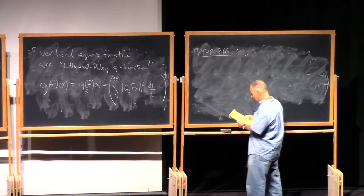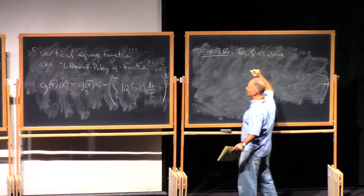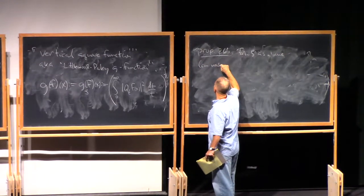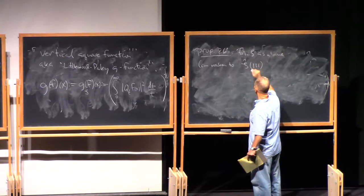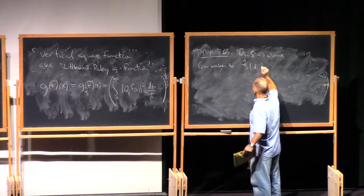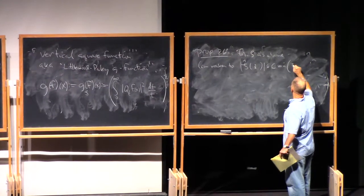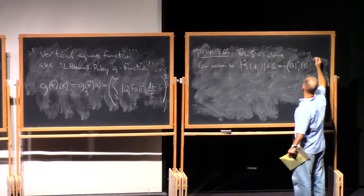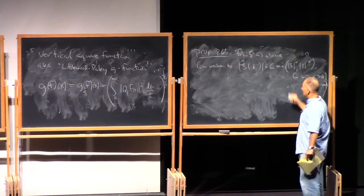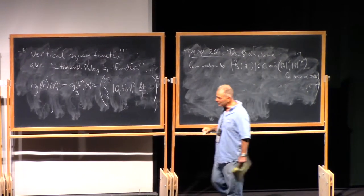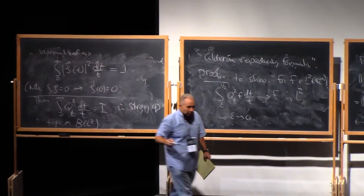So, next fact is the following. For zeta as above, and in fact, we can even weaken this to simply insisting that zeta hat of xi, well, it doesn't even really need to be radial for this part. Zeta hat of xi is less than or equal to the minimum, well, up to a constant, the minimum of xi to the alpha, xi to the minus alpha, for some alpha positive. Because if zeta hat satisfies these bounds, then the analog of this integral is gonna converge.